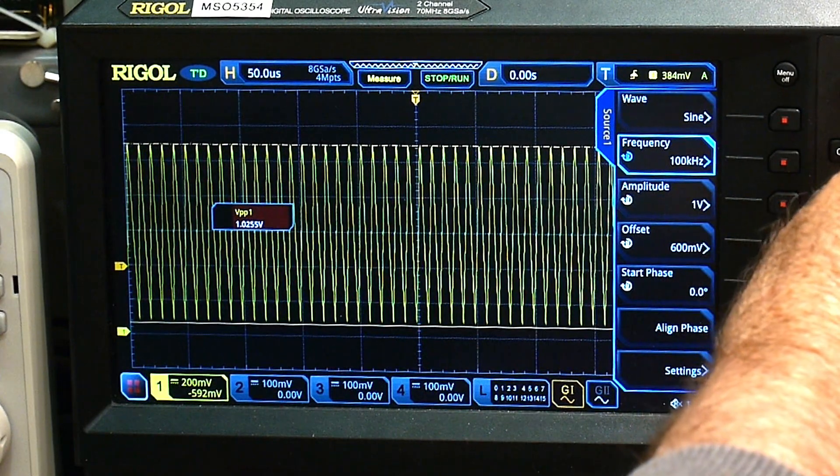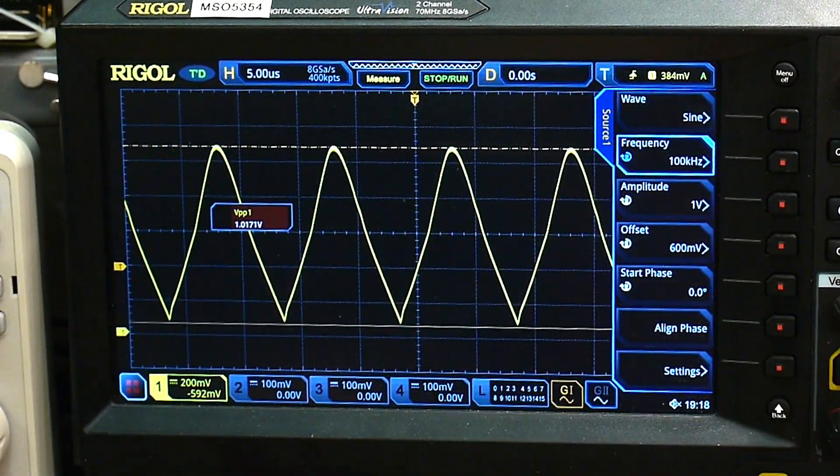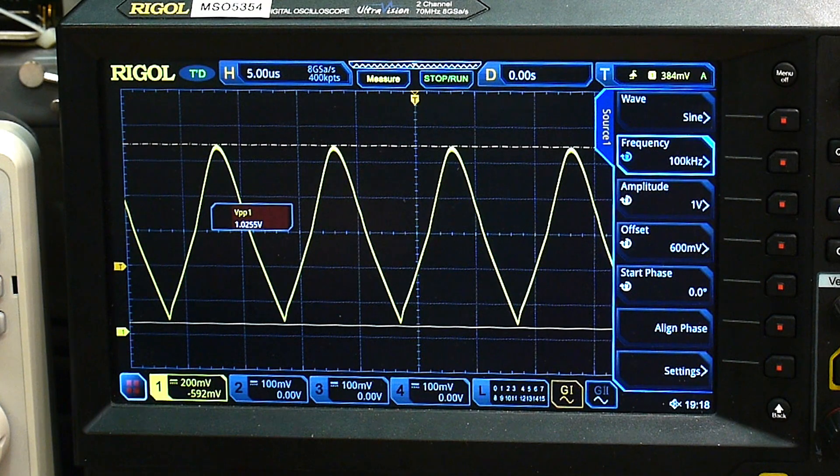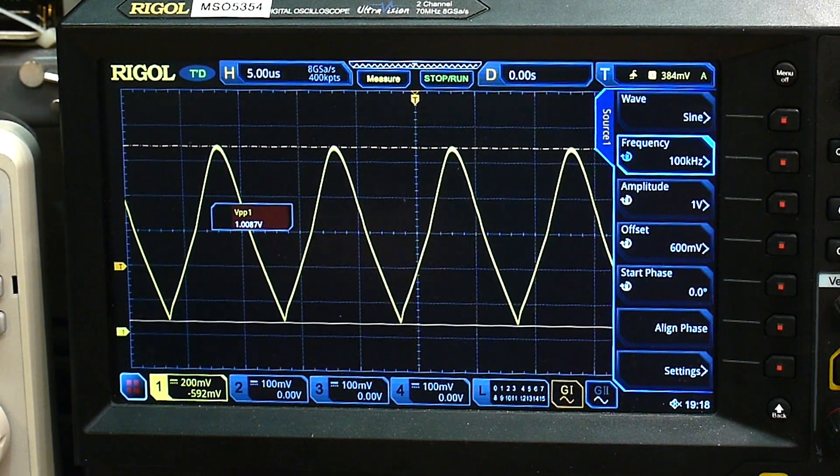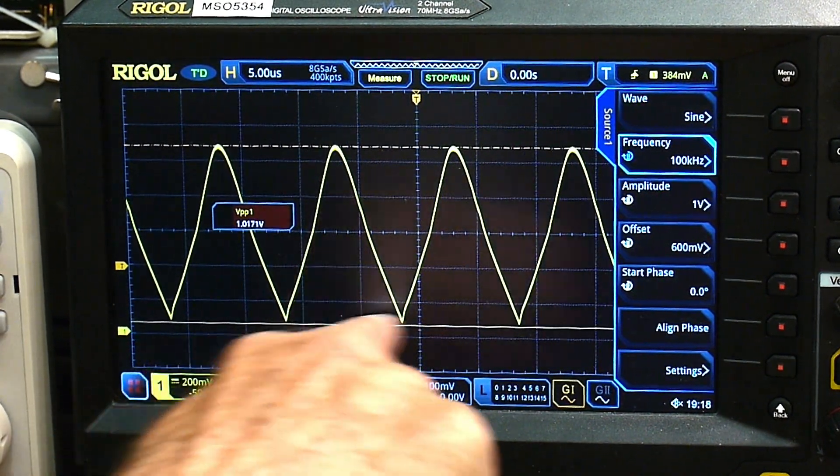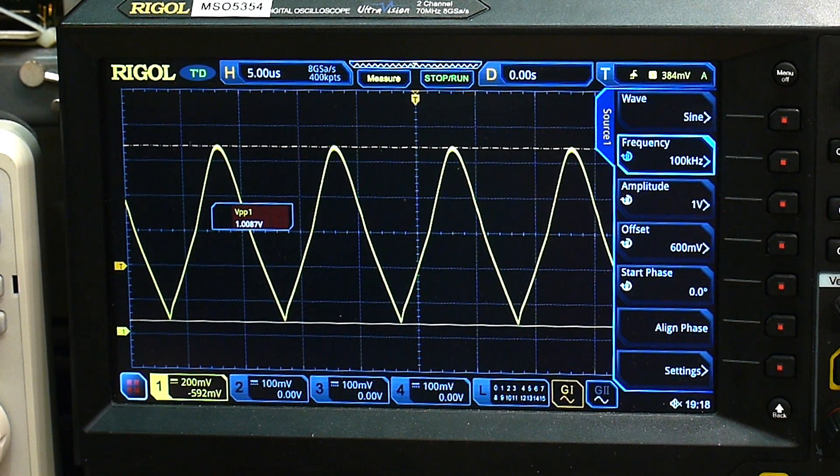Let's see. Let's go to 100 kilohertz. We should start to, yeah, see, we're starting to get into the bad zone of this thing. It's like I said, it's not a very fast op amp. So we're getting these bad things happening here at the bottom.